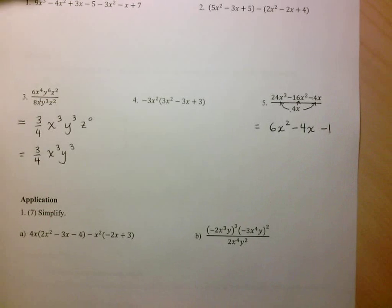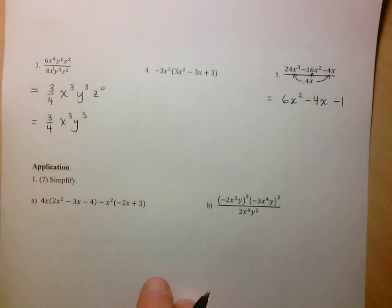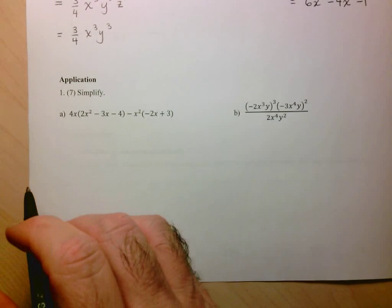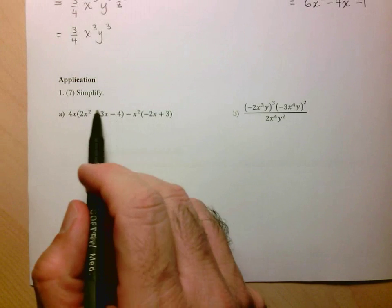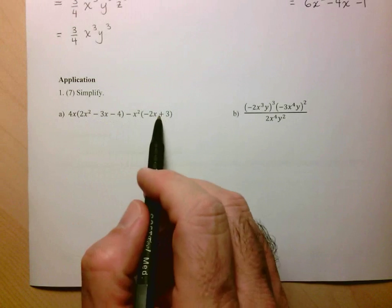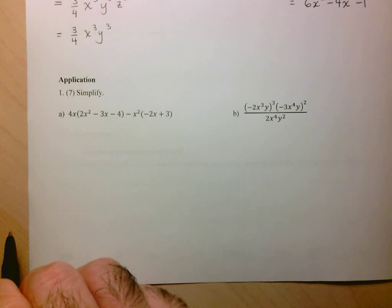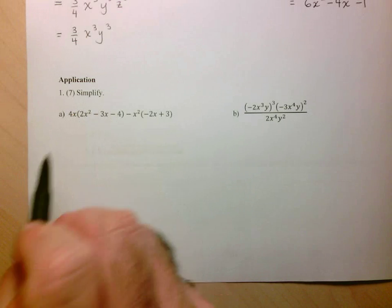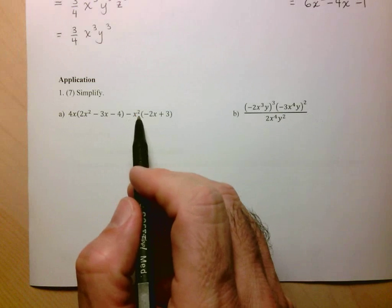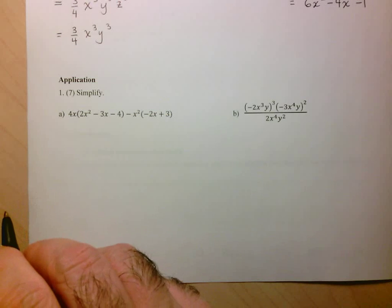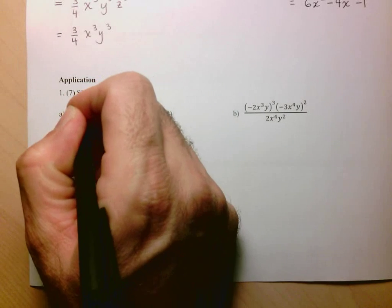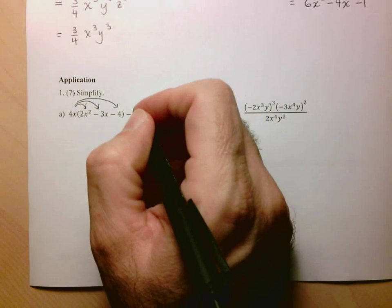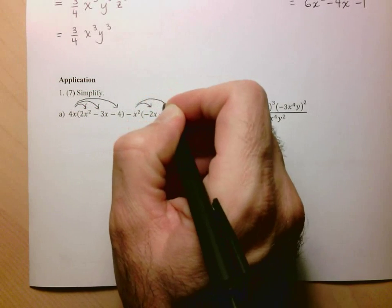Let's move on to the application section and the thinking section. Question 1a is a pretty standard simplification. You look at your brackets — there's no simplifying to be done inside the brackets. So you move to the multiplication: 4x multiplies the polynomial in the first brackets, and negative x squared is multiplying the binomial in the second bracket. We're going to distribute 4x to every term in that bracket, and distribute negative x squared to every term in the second bracket.